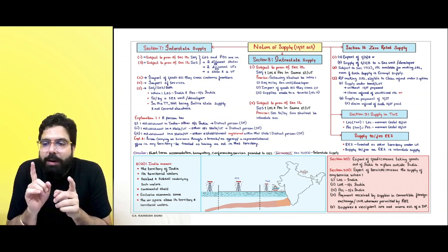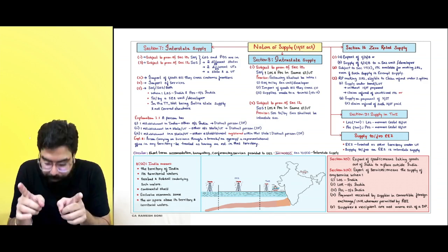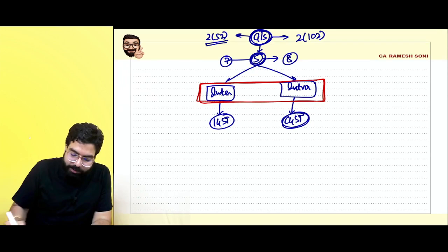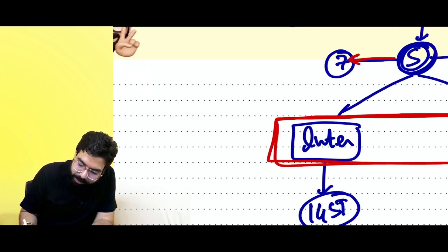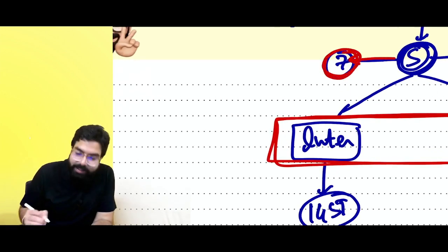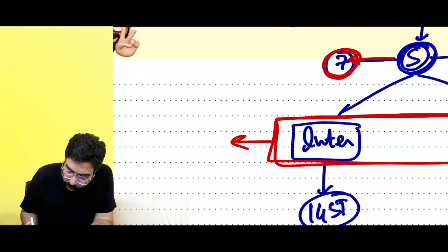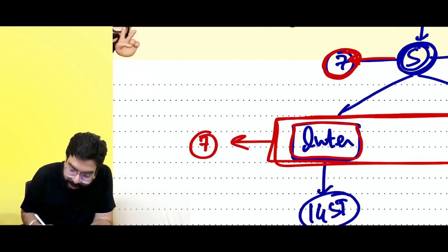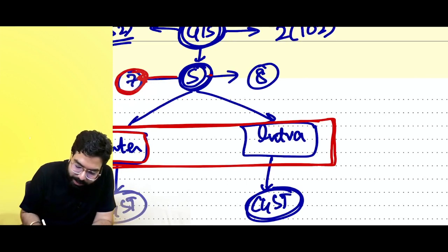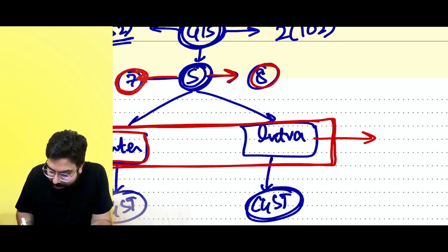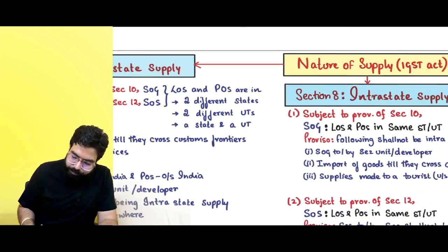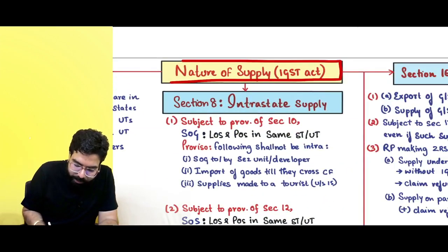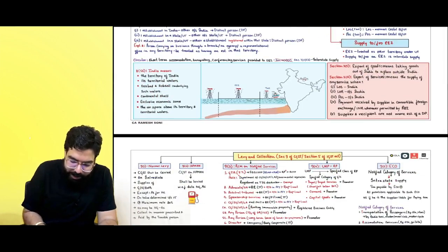Let's move to the next chapter: Nature of Supply. Section number 7 of the CGST Act and section number 7 of the IGST Act deal with interstate supply. Section number 8 of the CGST Act and section number 8 of the IGST Act deal with intrastate supply. Now, before understanding nature of supply, let's look at some definitions.